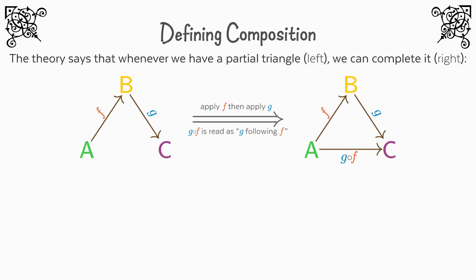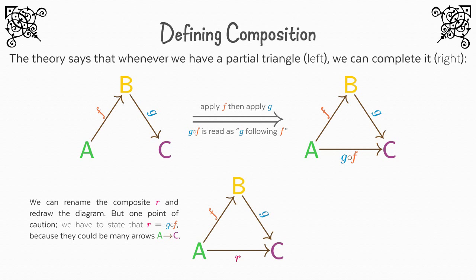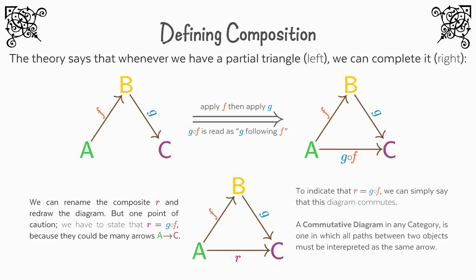One thing to note about composites is that we can give them new names. We can call G following F 'R,' for example, and redraw the diagram with R at the bottom. But one point of caution: we have to note that R equals G following F, because R could be a different function. We could do this in two ways: list the equation R equals G following F, or simply say that this diagram commutes. A commutative diagram, in any category, is one in which all paths between two arbitrary objects must be interpreted as the same arrow. So if I said this diagram of R commutes, then you know R equals G following F. This is the heart and soul of category theory — every definition I will give you can be reduced to a diagram that can be said to commute, and all formulations we do will be the same.